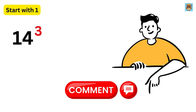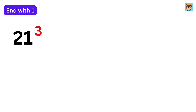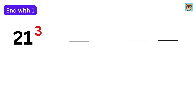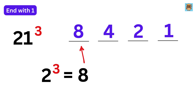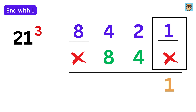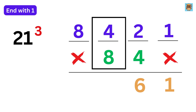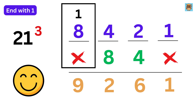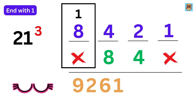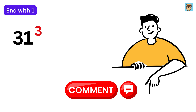Let us move to category two where the number ends with 1 — take 21 cubed as an example. Whatever we did before, we just do it in reverse. Make four spaces and write 1, then 2, then 2 squared or 4, then 2 cubed or 8. Put cross marks and double the middle numbers. Add to get 1, then 2 plus 4 is 6, then 4 plus 8 is 12 so write 2 and carry 1, and finally 8 plus 1 is 9. 21 cubed is 9261. What will be the value of 31 cubed?